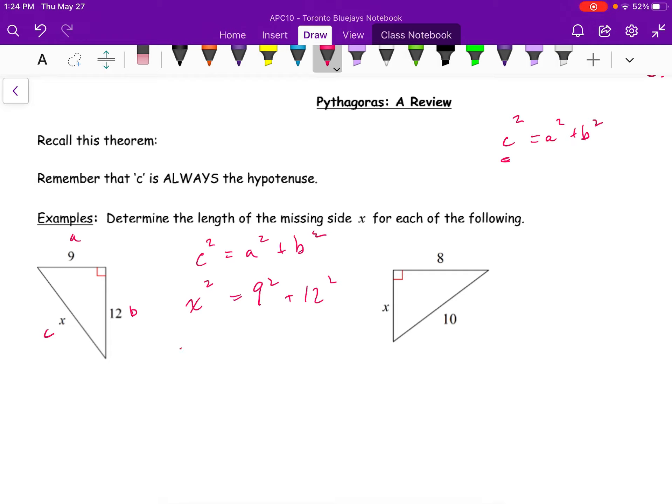So, using my calculator here, I get x squared is equal to 81 plus 144. And just doing this really quickly in my calculator, I should have been more prepared. So, what I get is x squared is equal to 225. So, if I take the square root of both sides...